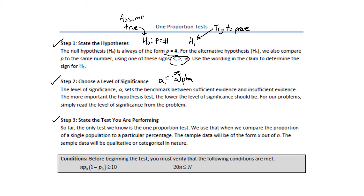Step 3: state the test you're performing. At this point we only know one test, and it's the one proportion test, so we just write that in step 3. We use this test whenever we're comparing the proportion of a single population to a particular number, which is usually a percentage. The sample data will have this form — x out of n, this many out of that many — which we call the sample proportion p-hat, equal to x divided by n. The data for this type of test will be qualitative or categorical in nature. There are two conditions, just like with confidence intervals for proportions, to check before we begin.